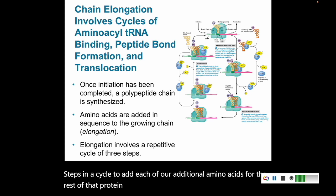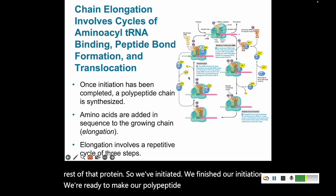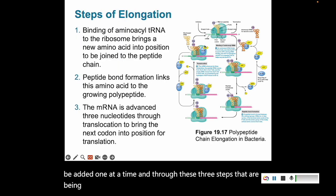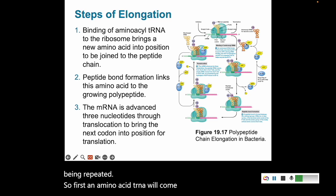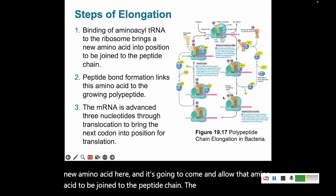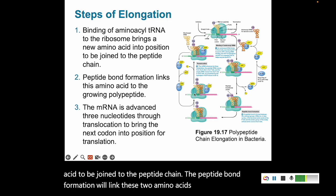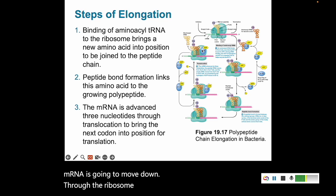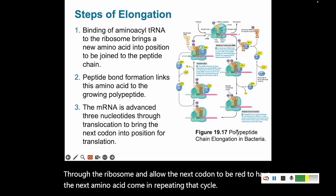We've finished our initiation and we're ready to make our polypeptide chain. We have our first amino acid — methionine or F-met, depending on if we're talking about bacteria or eukaryotes. Amino acids will be added one at a time through these three steps that are being repeated. First, an amino acid tRNA will come to the ribosome, bring its new amino acid, and allow that amino acid to be joined to the peptide chain.